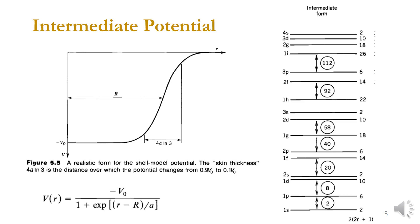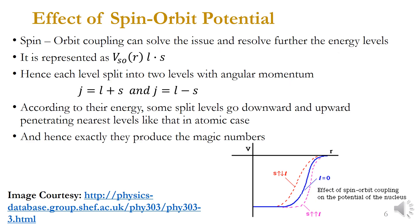Just as in the atomic case, spin-orbit coupling is the key. In the nuclear case, spin-orbit coupling is the reason the magic numbers above 20 are reproduced. This interaction, represented by a potential term proportional to l·s, further splits each previously obtained energy level of the intermediate potential model into two.